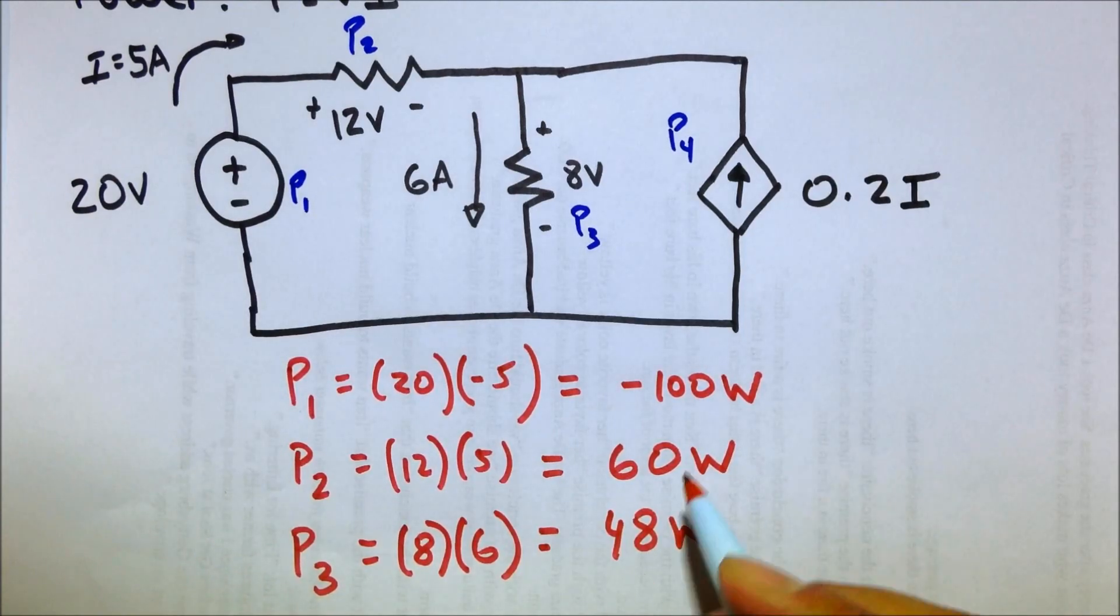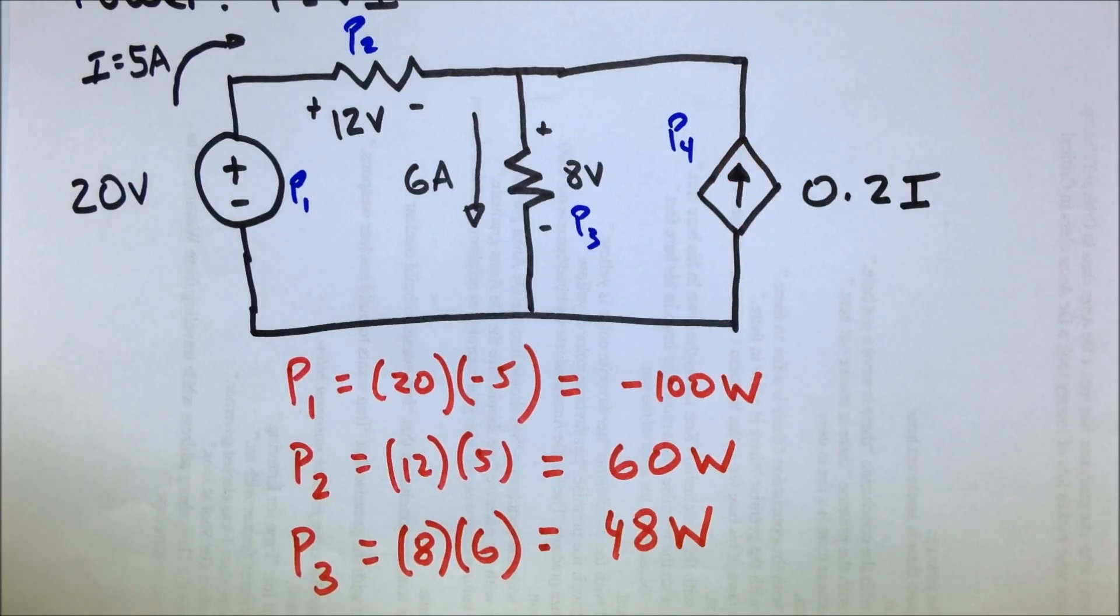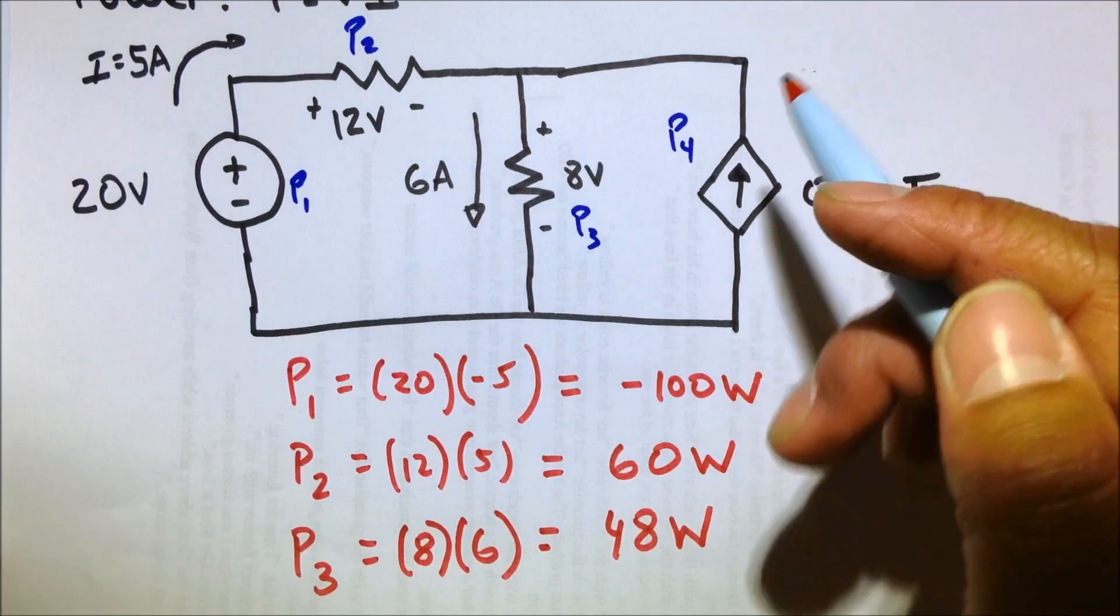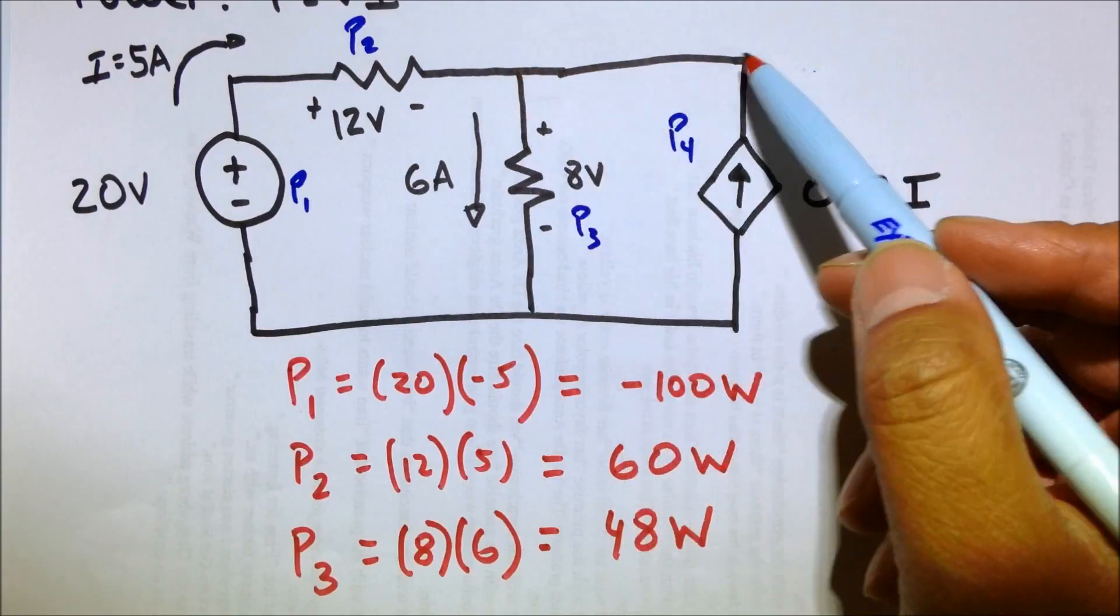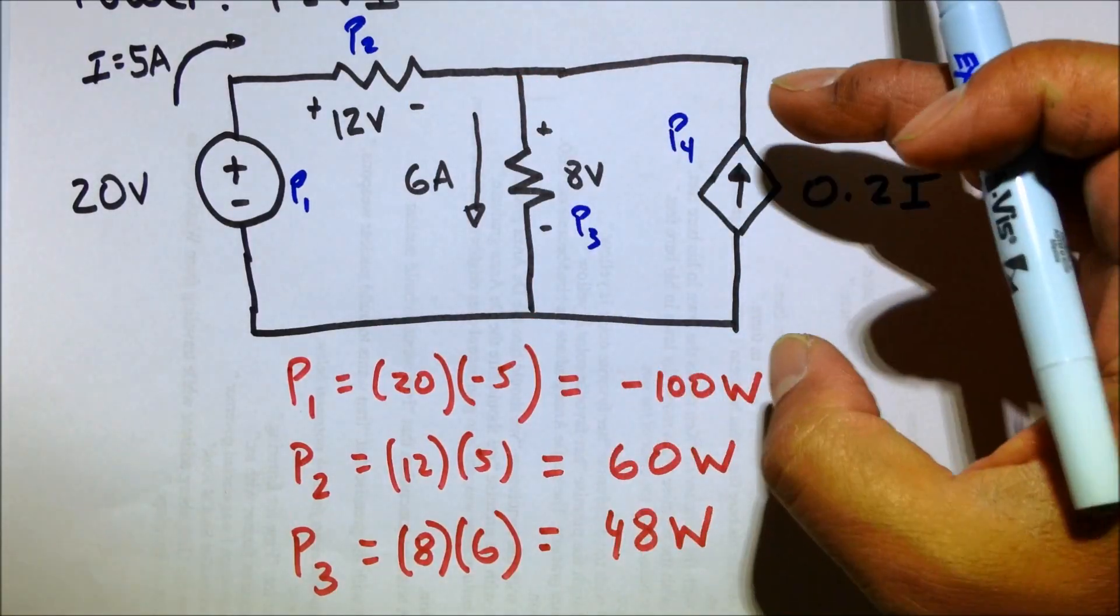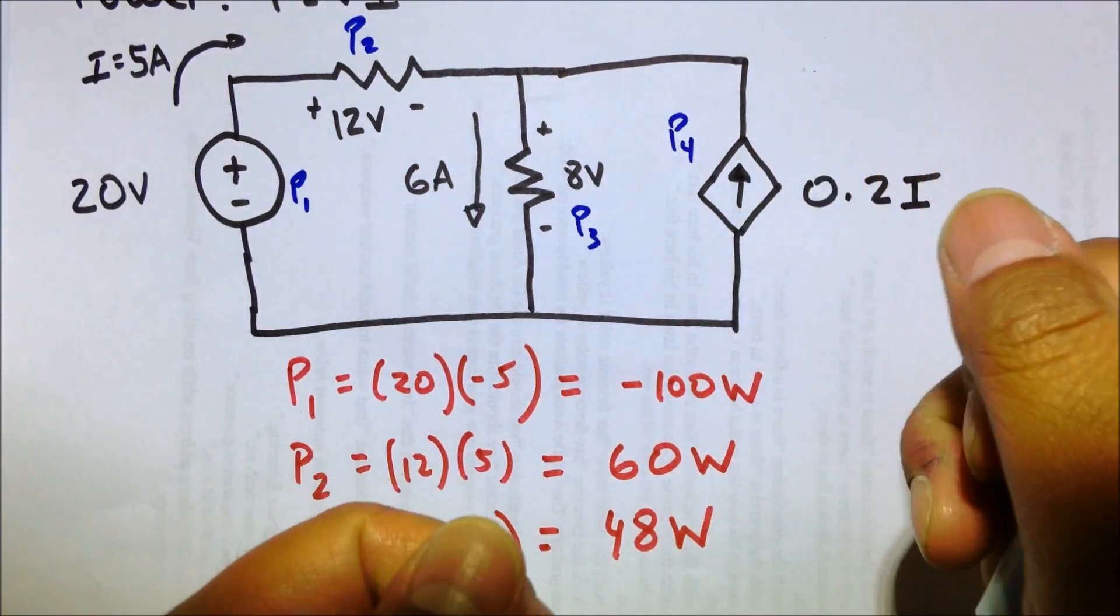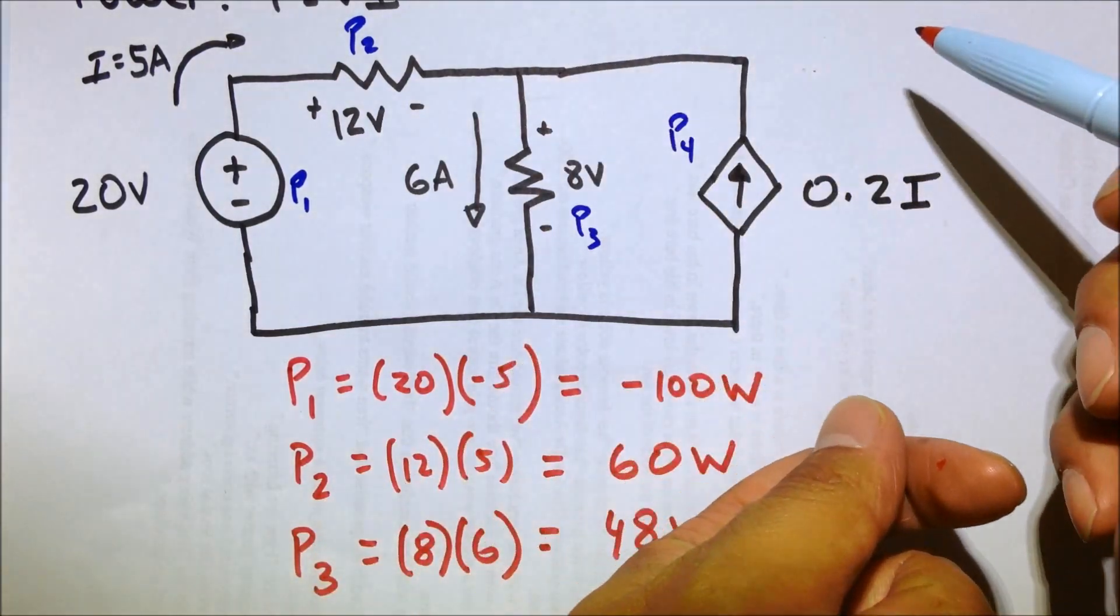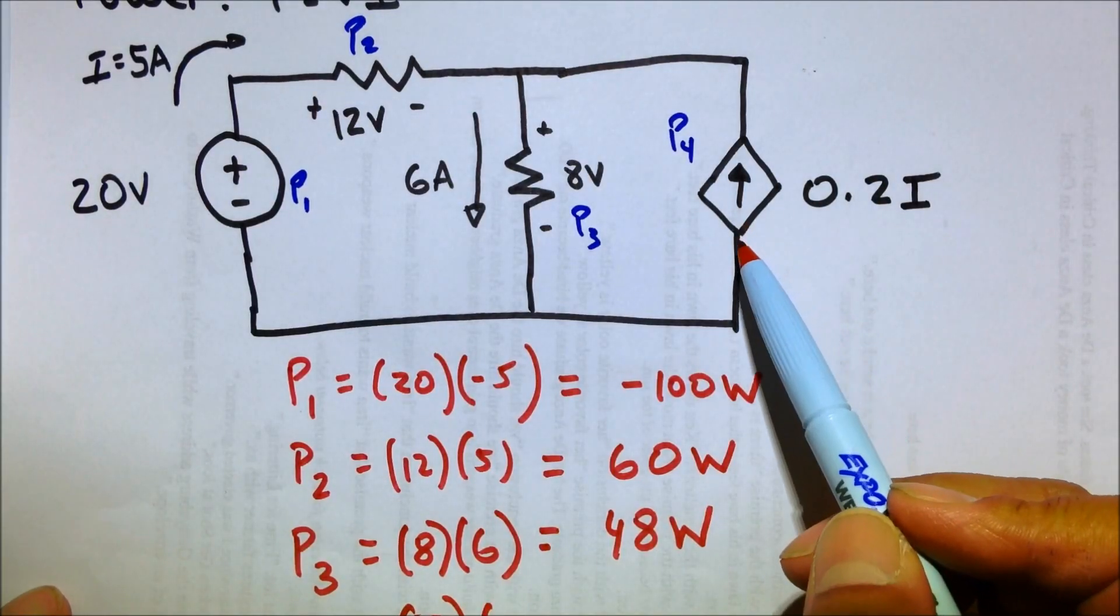And lastly, P4, which is going to be the current supplied by this guy. Well, we know that the voltage drop across here is 8 volts. All right? Because if you take a look at the node, this is the same node. This is the same node here. Same node. So if the voltage across here is 8 volts, that means the voltage across here is also 8 volts. You get an ohmmeter. You put it across there. That's telling you what the voltage drop is across anything in parallel.